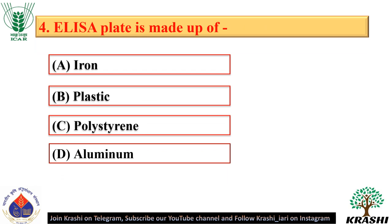Question number 4. ELISA plate is made up of polystyrene. ELISA stands for enzyme-linked immunosorbent assay, which is commonly used to detect antibodies.